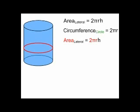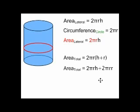Now let's look at the total area formula for the cylinder. We can use algebra to split this formula into these two parts. The first part is the lateral area formula again, 2πrh.